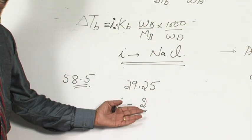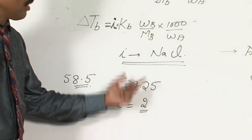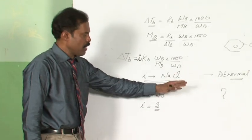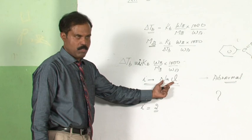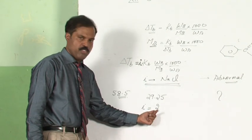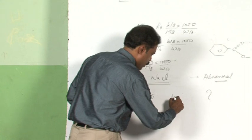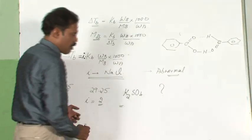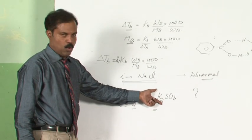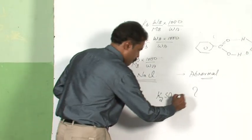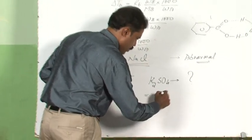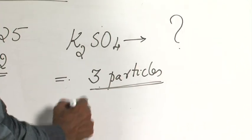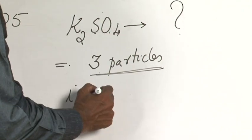How would you know the value of i? It is very easy if the substance is a strong electrolyte — just calculate the number of particles it produces; that is going to be the value of i. For example, what will be the value of i for K₂SO₄? Since K₂SO₄ is a strong electrolyte, it dissociates to form 3 particles. Therefore the value of i for K₂SO₄ is 3.